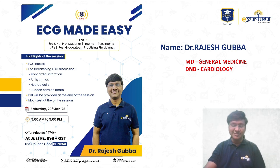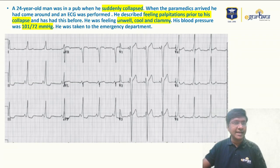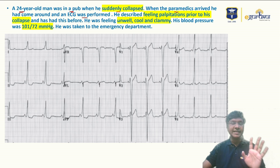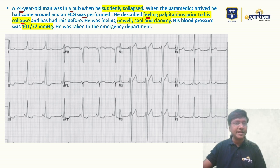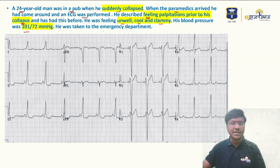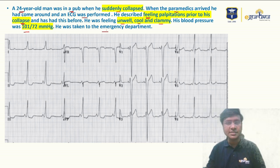Let me discuss the clinical scenario of today. I have a 24-year-old man who was in a pub when he suddenly collapsed. The paramedics arrived, performed an ECG, and checked the vitals. He described feeling palpitations prior to the collapse and was feeling unwell with cool and clammy extremities. Blood pressure was around 101/72 mmHg, and he was immediately taken to the emergency department after the ECG was taken.